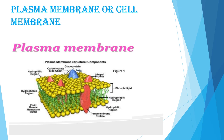In 1972, Singer and Nicholson suggested a model called the fluid mosaic model to explain the ultrastructure of the plasma membrane or any other membrane of the cell. According to them, the plasma membrane is made up of a bilayer — a two-molecule-thick layer of phospholipids — with two types of protein molecules floating in the fluid phospholipid layer. They described it as protein icebergs floating in a sea of lipids. This model is the most accepted one as it describes both the properties and organization of the membrane.